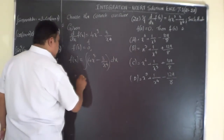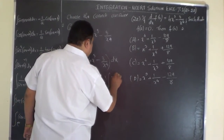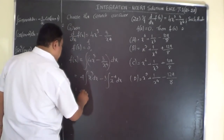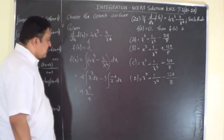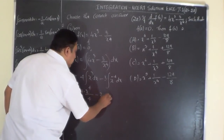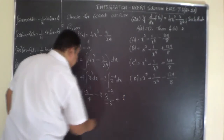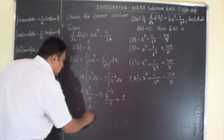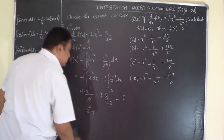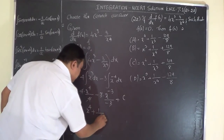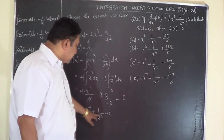Integrating: 4∫x³ dx − 3∫x^(-4) dx = 4 · x⁴/4 − 3 · x^(-3)/(-3) + c. The 4s cancel and the 3s cancel, giving x⁴ + x^(-3) + c, which is x⁴ + 1/x³ + c.